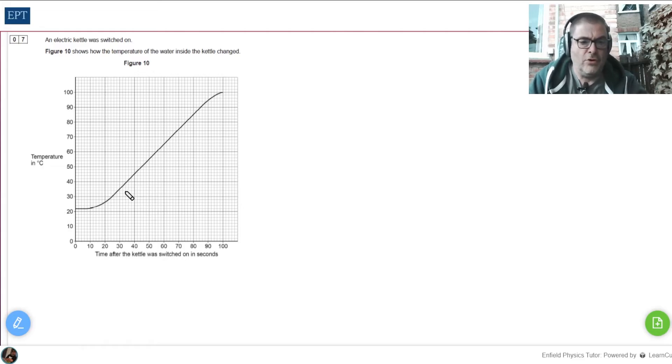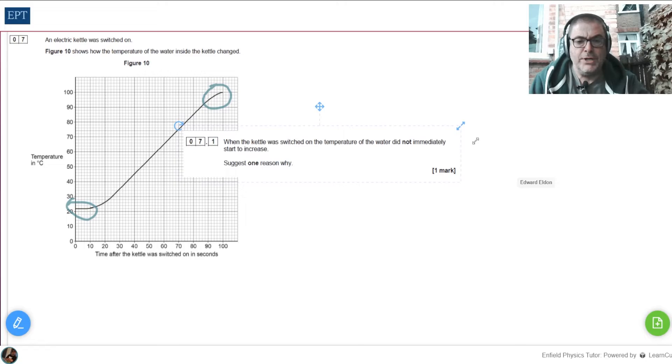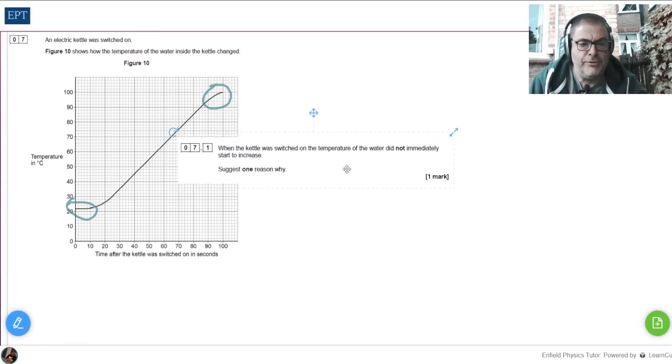Just to draw out, we've got obviously a nice straight bit here, a bit of a curve at the end there, a bit of a flat bit at the start. Here's the first question: when the kettle is switched on, the temperature of the water did not immediately start to increase. Suggest one reason why.